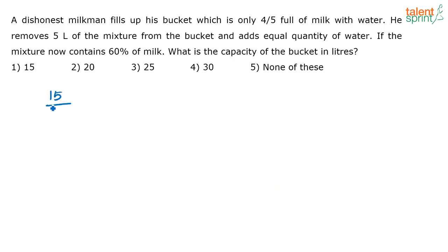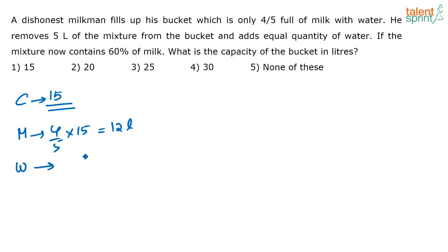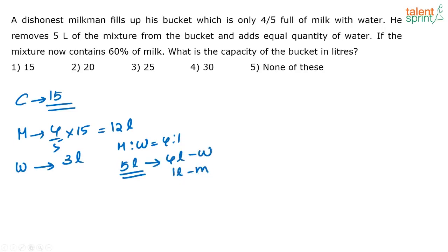The first option says 15 liters. If the capacity is 15 liters, then four-fifths of 15 is 12 liters of milk, and three liters of water to fill the bucket. The milk-to-water ratio is four to one. When removing five liters of mixture, four liters will be milk and one liter will be water. So from 12 liters of milk, removing four liters leaves eight liters of milk.